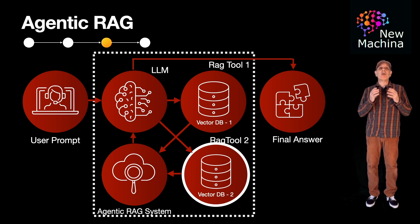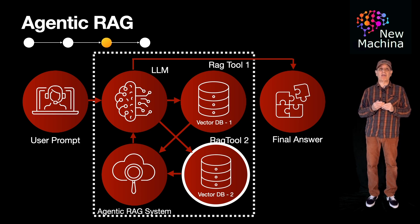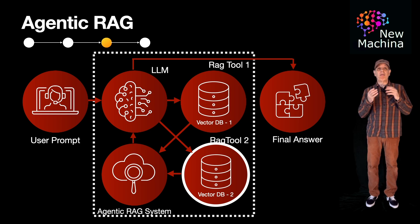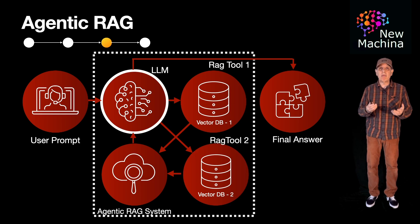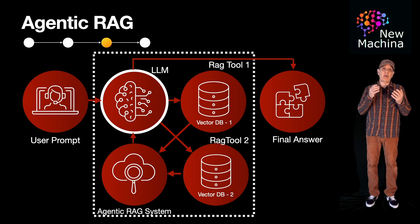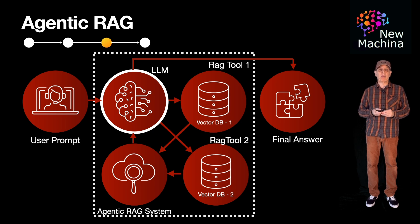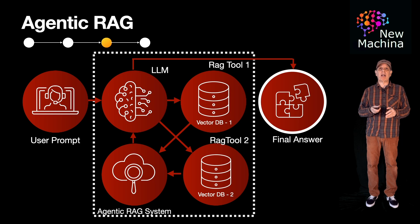Here you're seeing the benefits of agentic RAG. In traditional RAG, the LLM gets one shot to generate a response. But in agentic RAG, the system doesn't have to settle for the first set of results from a vector database. The LLM can assess intermediate results, detect missing information, re-query the vector database, or query a second vector database as it refines its understanding over multiple steps. Once the LLM has all the information it needs, it can generate a response grounded in the latest, accurate information.